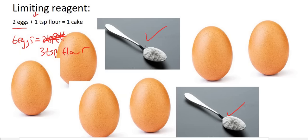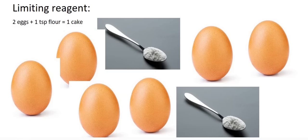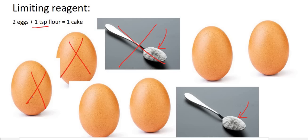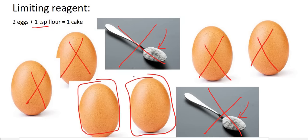We can see now that the flour is limiting us — we cannot make three cakes because we have enough egg but we don't have enough flour. So how many cakes can we make? We look at the flour: for every cake you need one teaspoon of flour, so we can make one cake with that one and use two eggs. Then for the second teaspoon of flour, use two more eggs. We will only be able to make two cakes, and then we'll have two eggs left over. In this scenario, the flour is the limiting reagent because it limits how many cakes we can make.